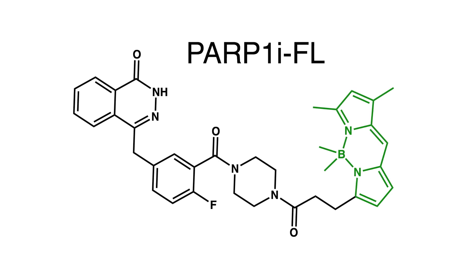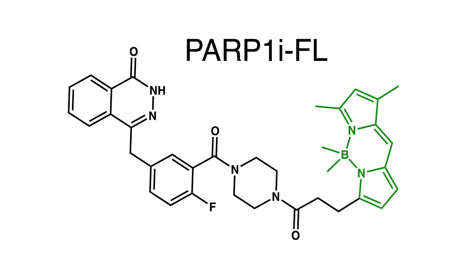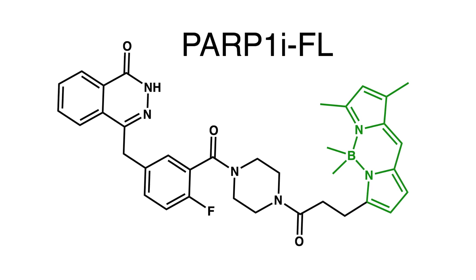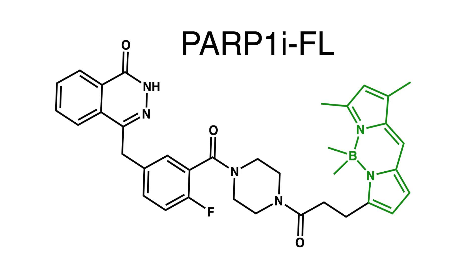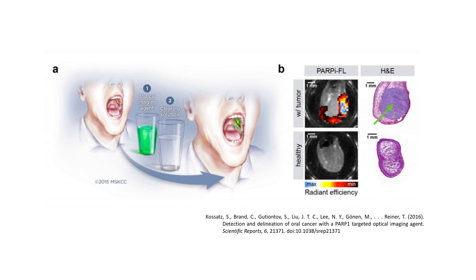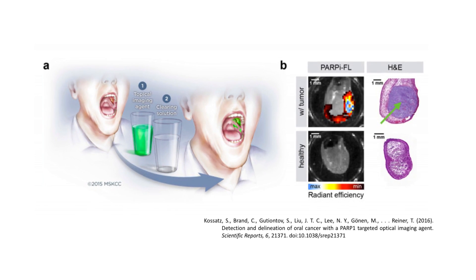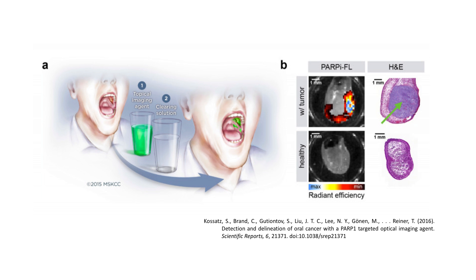PARP is an enzyme that's very important in DNA repair. And PARP inhibitors are actually translated to the clinic right now for tumor treatments. And since PARP is overexpressed in many tumors, we developed a fluorescent version of one of the PARP inhibitors. And we're developing an application where we can use this as a mouthwash for patients to detect oral cancer early on. I was able to do that and we published these results, and this was the basis for the clinical trial.